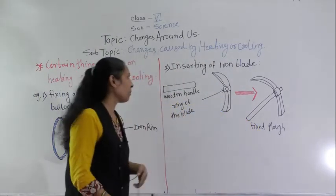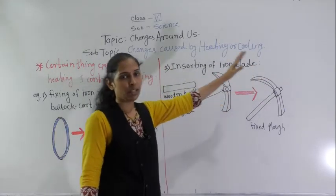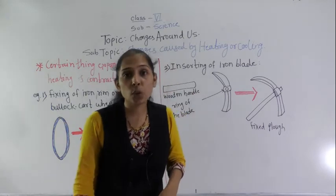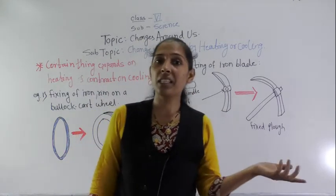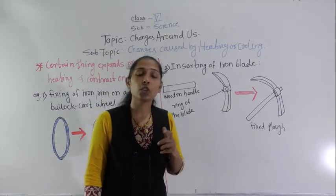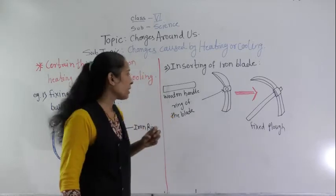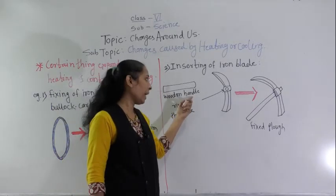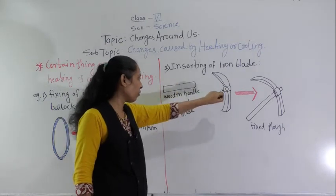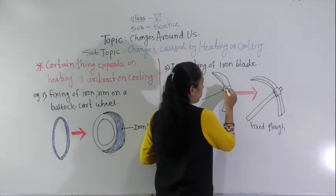Now let's see the next example: inserting of an iron blade. There are different agricultural tools such as a plow and a spade used for digging. These tools have a wooden handle that gets fixed into the hole or ring of the blade.